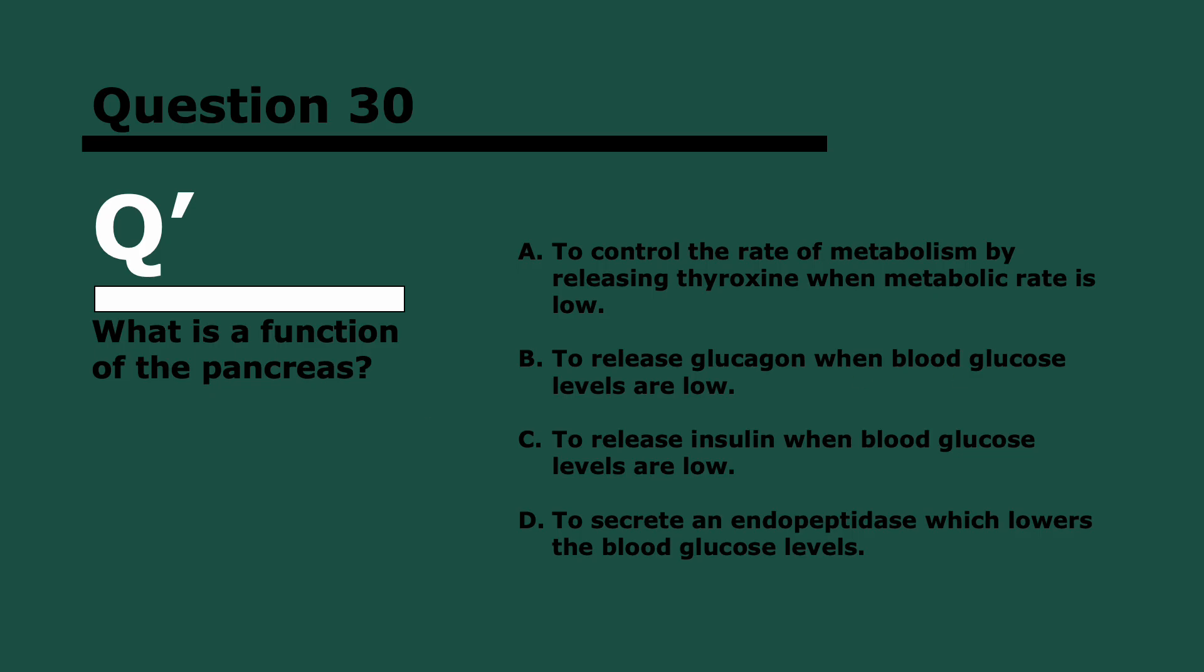Finally, question 30. What is the function of the pancreas? Three, two, and one. To release glucagon when blood glucose levels are low. It releases insulin when blood glucose levels are high and glucagon when they're low. That's why C is wrong. They don't secrete an endopeptidase, so D is wrong. They don't control the rate of metabolism, that's the thyroid gland that releases thyroxine, not the pancreas.